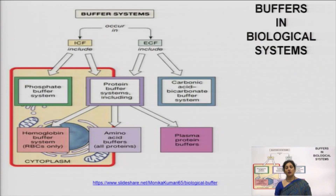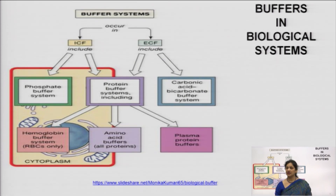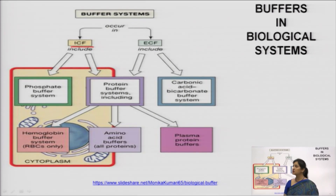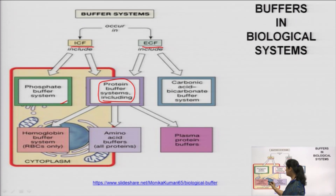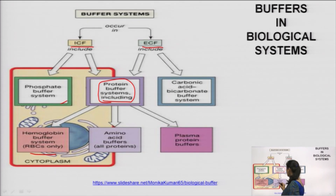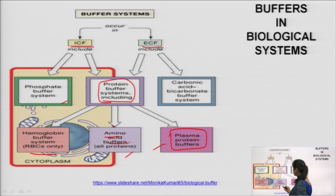There are different buffers in biological systems. In our body, many buffers maintain the acid-base balance. Intracellular fluid (ICF) contains phosphate buffer systems and protein buffer systems. Protein buffer systems include the hemoglobin buffer system present in RBCs, amino acid buffer systems, and plasma protein buffers — all very important for acid-base balance.